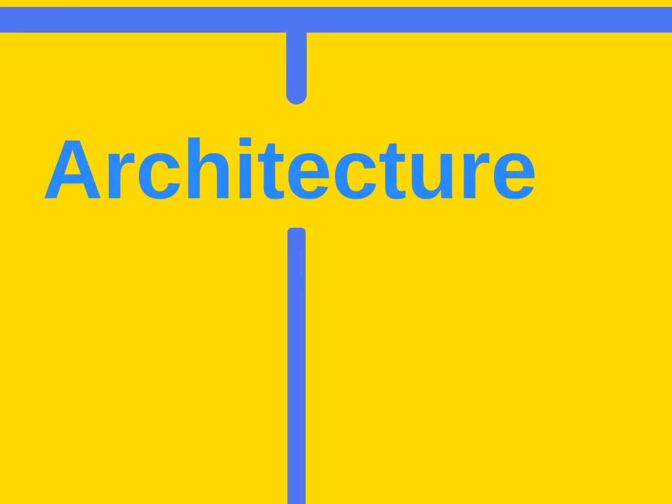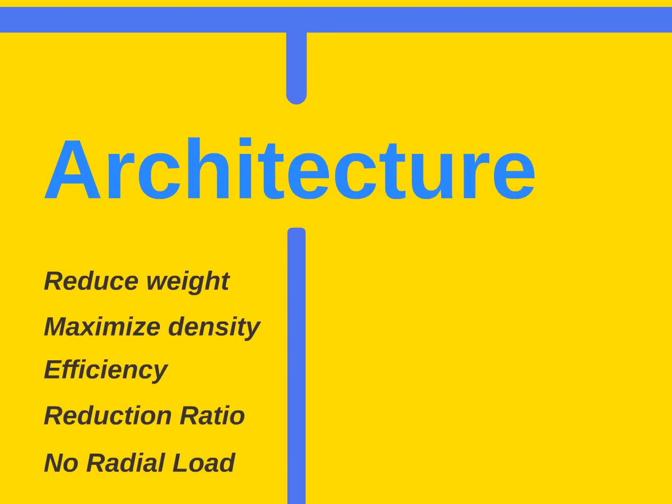First step, have a look on the architecture. The targets are keeping the weight as low as possible, keeping in mind this has to fly. Maximize the density in order to reduce the size, thus maximizing the integration in the engine. Maximizing the efficiency—we don't want to lose the gain of the optimization in the thermal load in the gearbox. Using the best reduction ratio to allow best optimization. Finally, adding no radial loads.